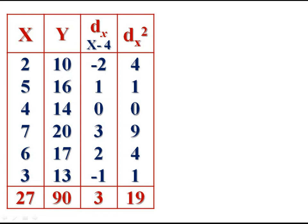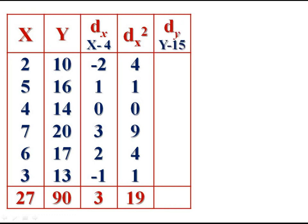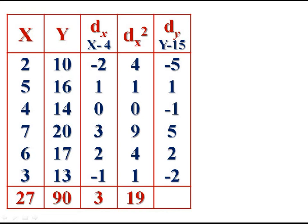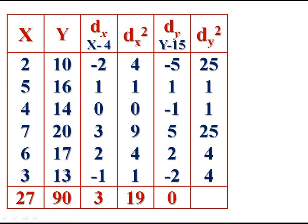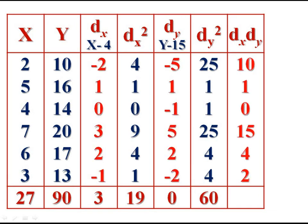Find the deviation of the y variable from assumed mean 15 — called dy. The deviations are: 10−15 = −5; 16−15 = 1; 14−15 = −1; then 5, 2, −2. Summation of dy = 0. Square the deviations: dy² = 25, 1, 1, 25, 4, 4. Summation of dy² = 60. Multiply the deviations dx into dy: (−2)(−5) = 10; (1)(1) = 1; (0)(−1) = 0; (3)(5) = 15; (2)(2) = 4; (−1)(−2) = 2. Summation of dx·dy = 32.